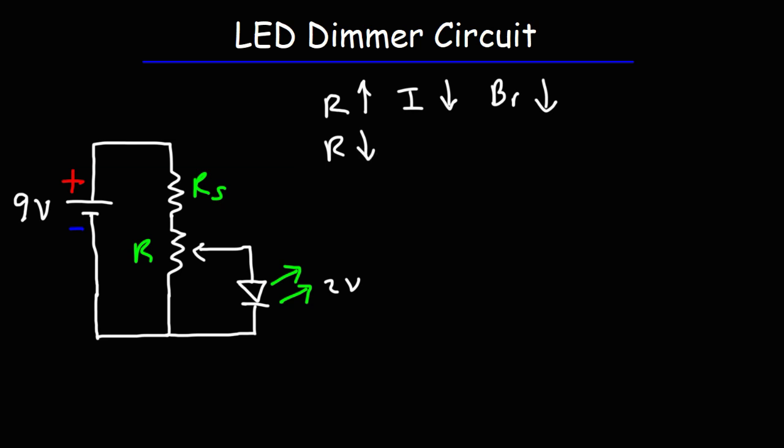By decreasing the resistance using the potentiometer, the current will increase and the brightness is going to go up. So therefore, you can adjust the brightness of the circuit by controlling the potentiometer.